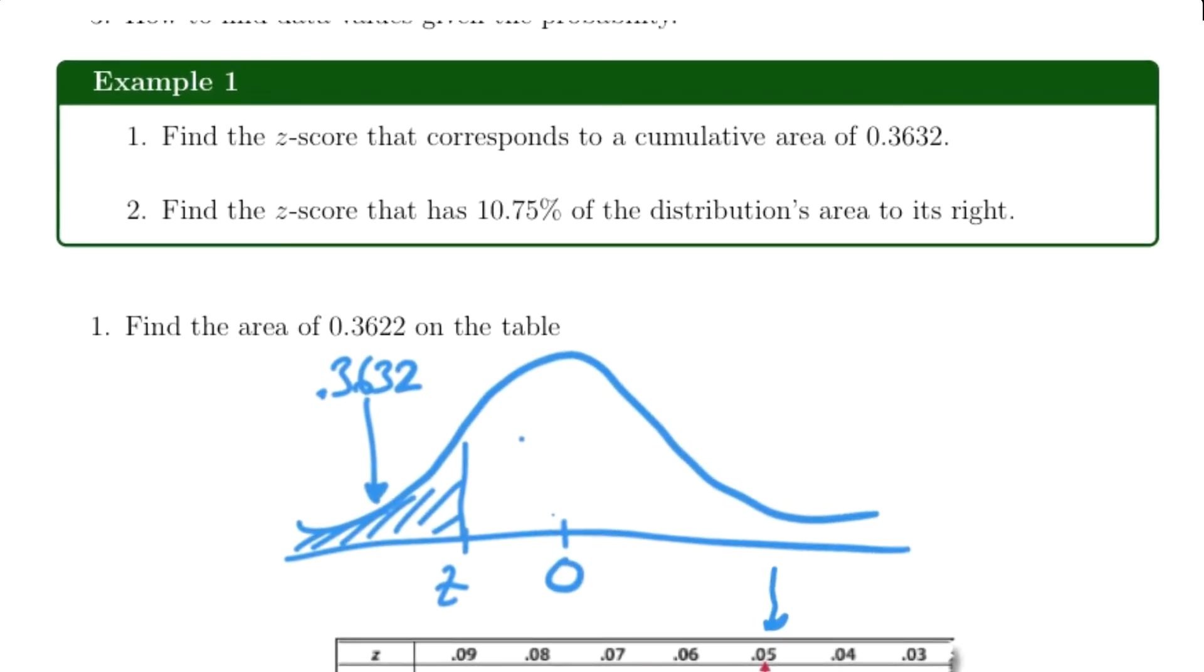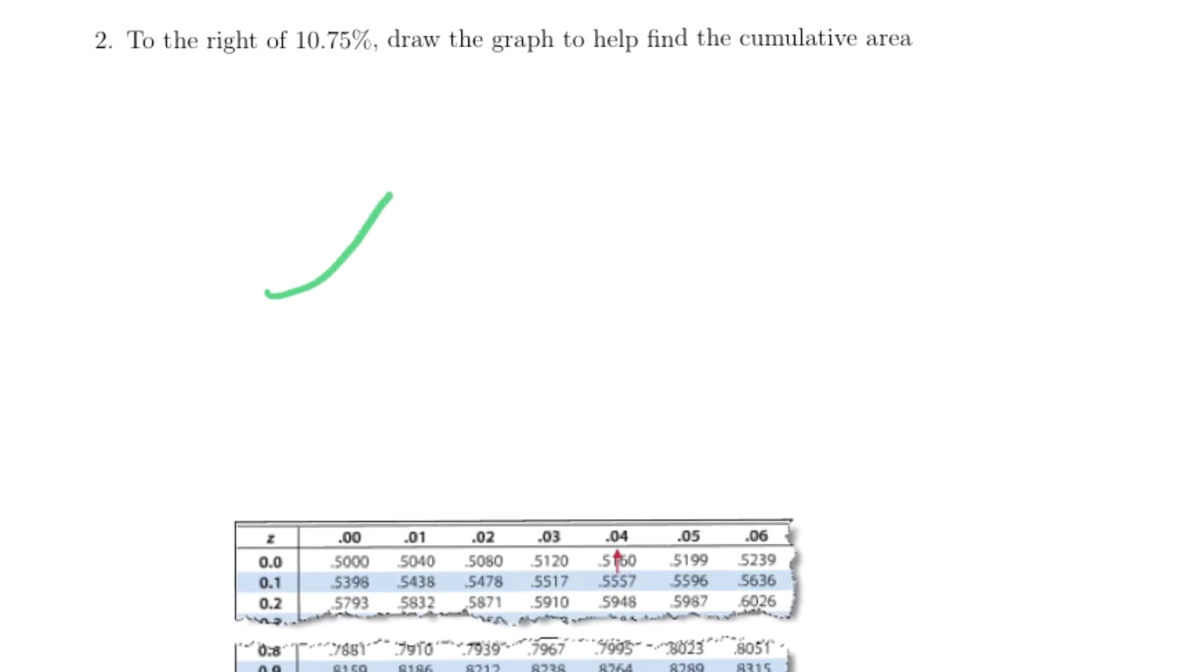The second example is: Find the z-score that has 10.75% of the distribution to its right. As always, we'll sketch the normal curve. We're looking for the area where we have 0.1075 to the right, right there. We'll go ahead and shade that.